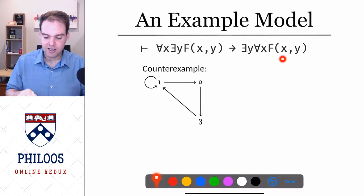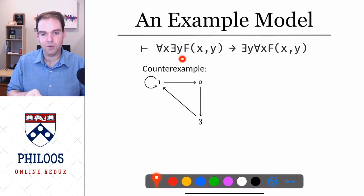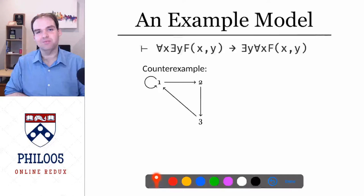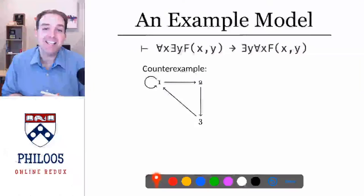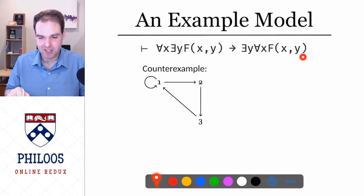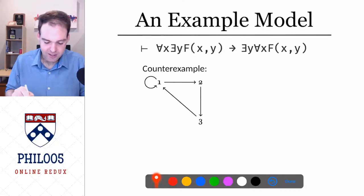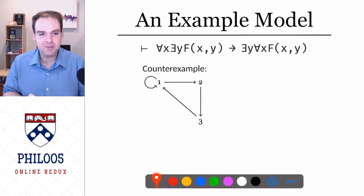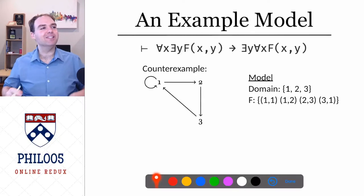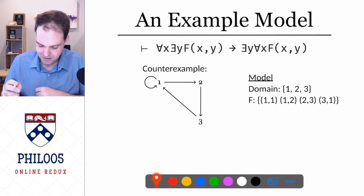Here's a model that makes this sentence false — it makes the antecedent true and the consequent false. The antecedent says 'for all x there exists a y such that f(x,y).' There are three things in our model — one, two, three — and each one loves somebody: one loves itself, two loves three, and three loves one. So everybody loves somebody, but there does not exist a person that everybody loves. That's why the consequent is false.